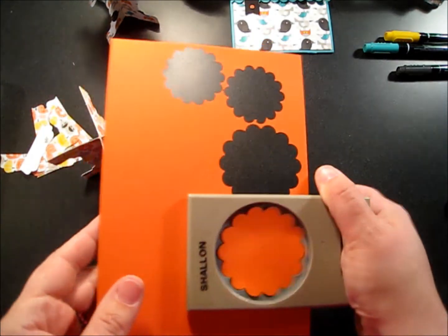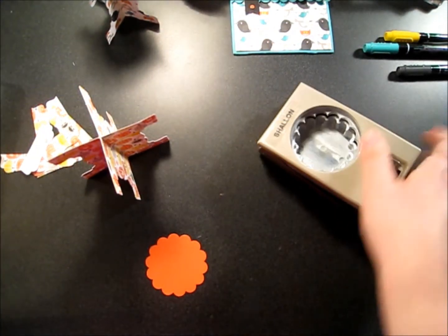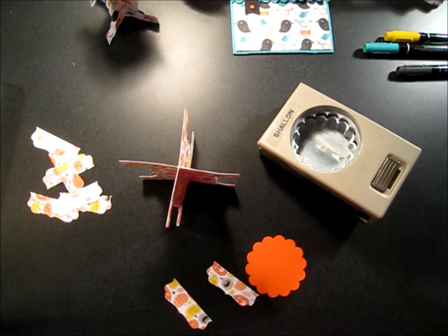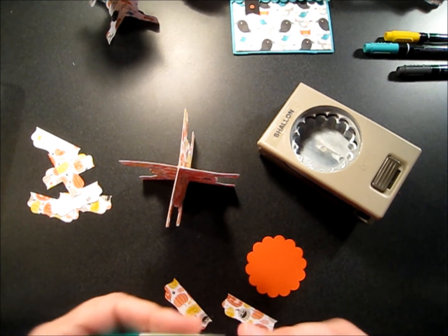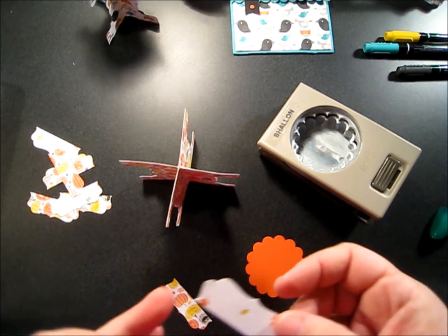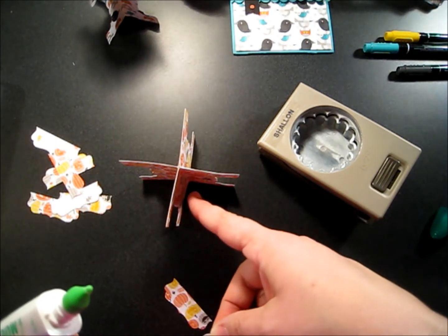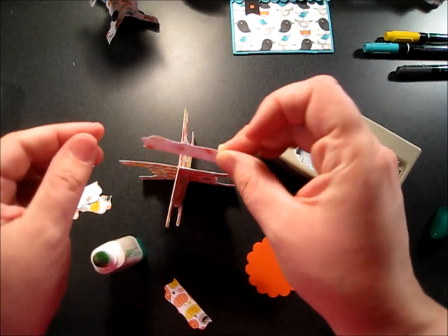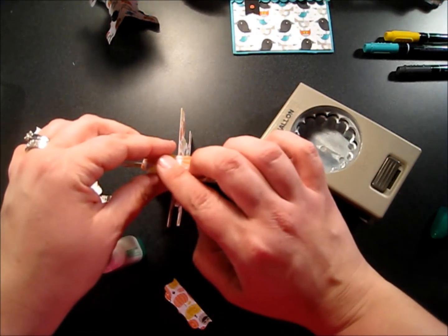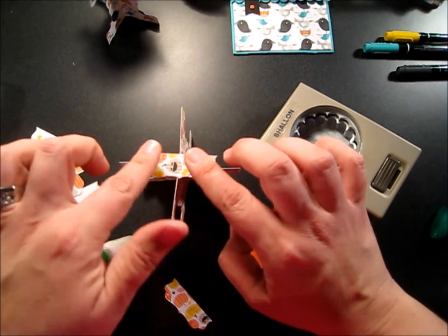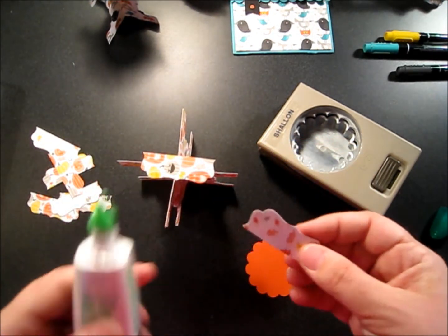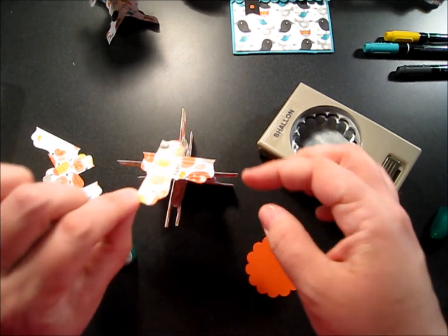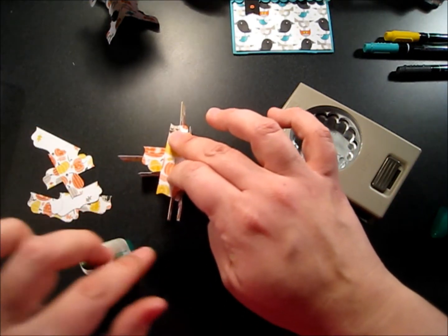Then I'm going to take my large scallop punch and I'm going to go for the tangerine tango color and punch a scallop. This was the part that I found helped to hold this the best. I want my pointy end, so I'm going to go back to my Tombow. I'm just going to put a line of Tombow in the middle and I want to try to place these across the center just to give it a little bit more stability.